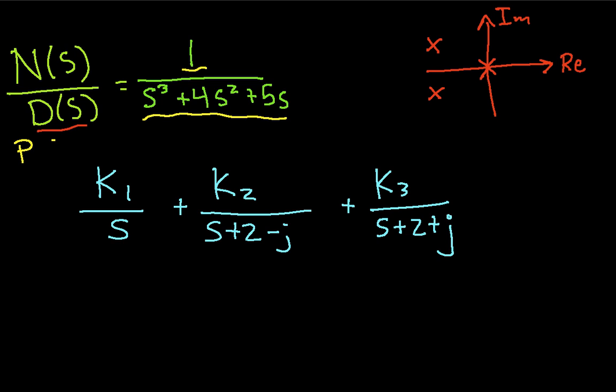So the partial fraction expansion looks like this. The thing that we have not talked about, and will not talk about in this video, but will talk about in subsequent videos, is how to compute these constants, because that's the magic here. Once I know the constants, then I can take the inverse Laplace transform using a table, and everything is great. But again, we won't talk about how to do that in this video.